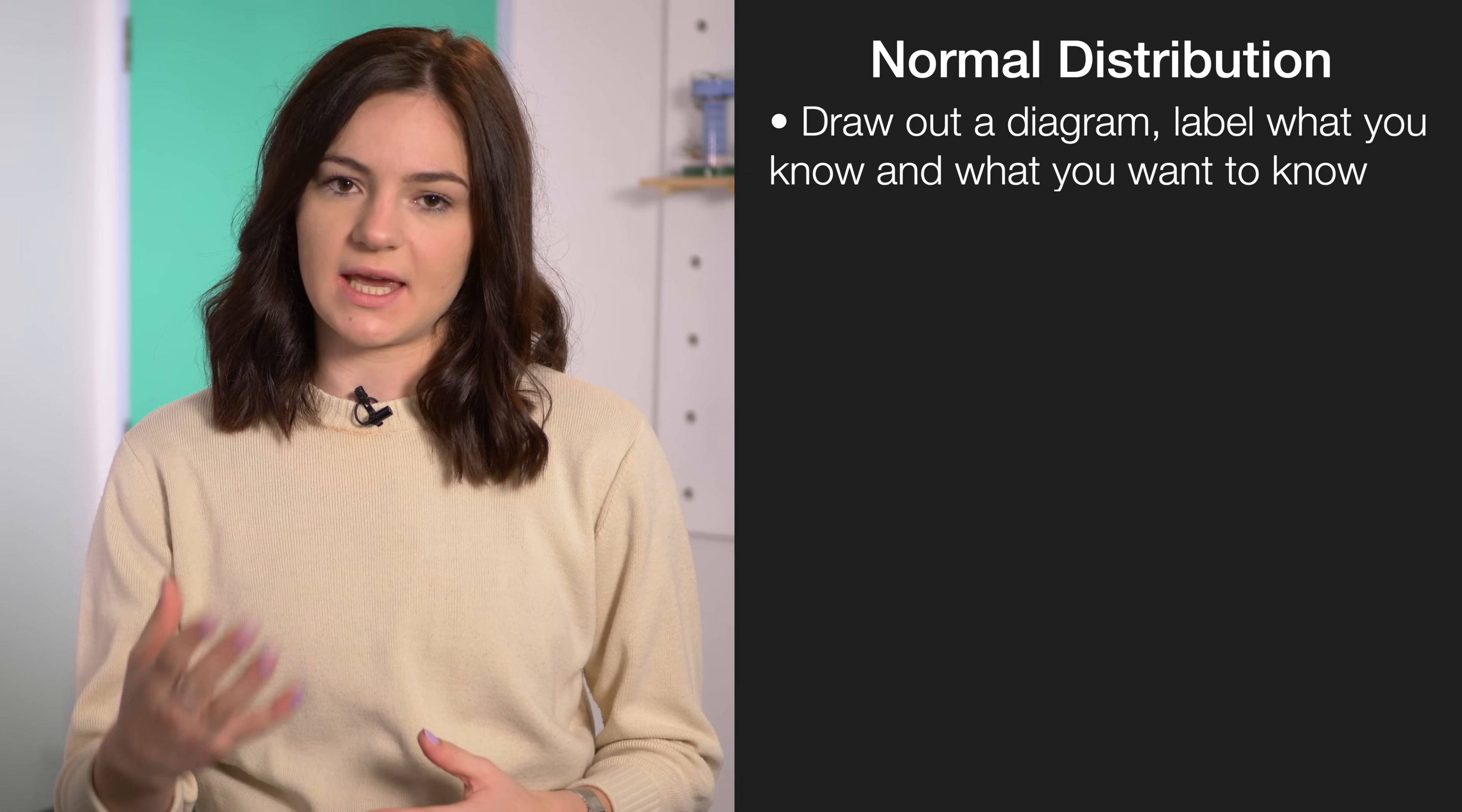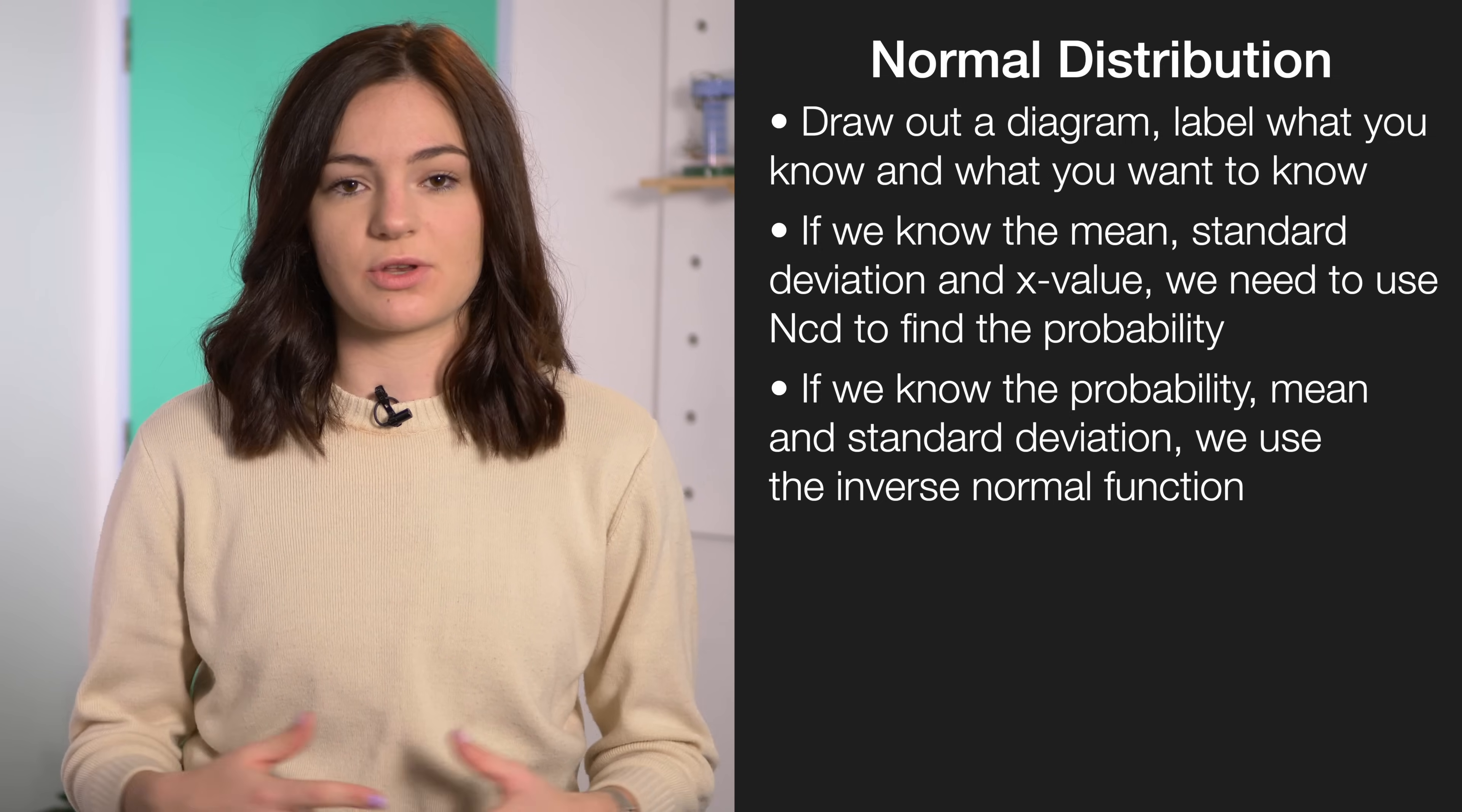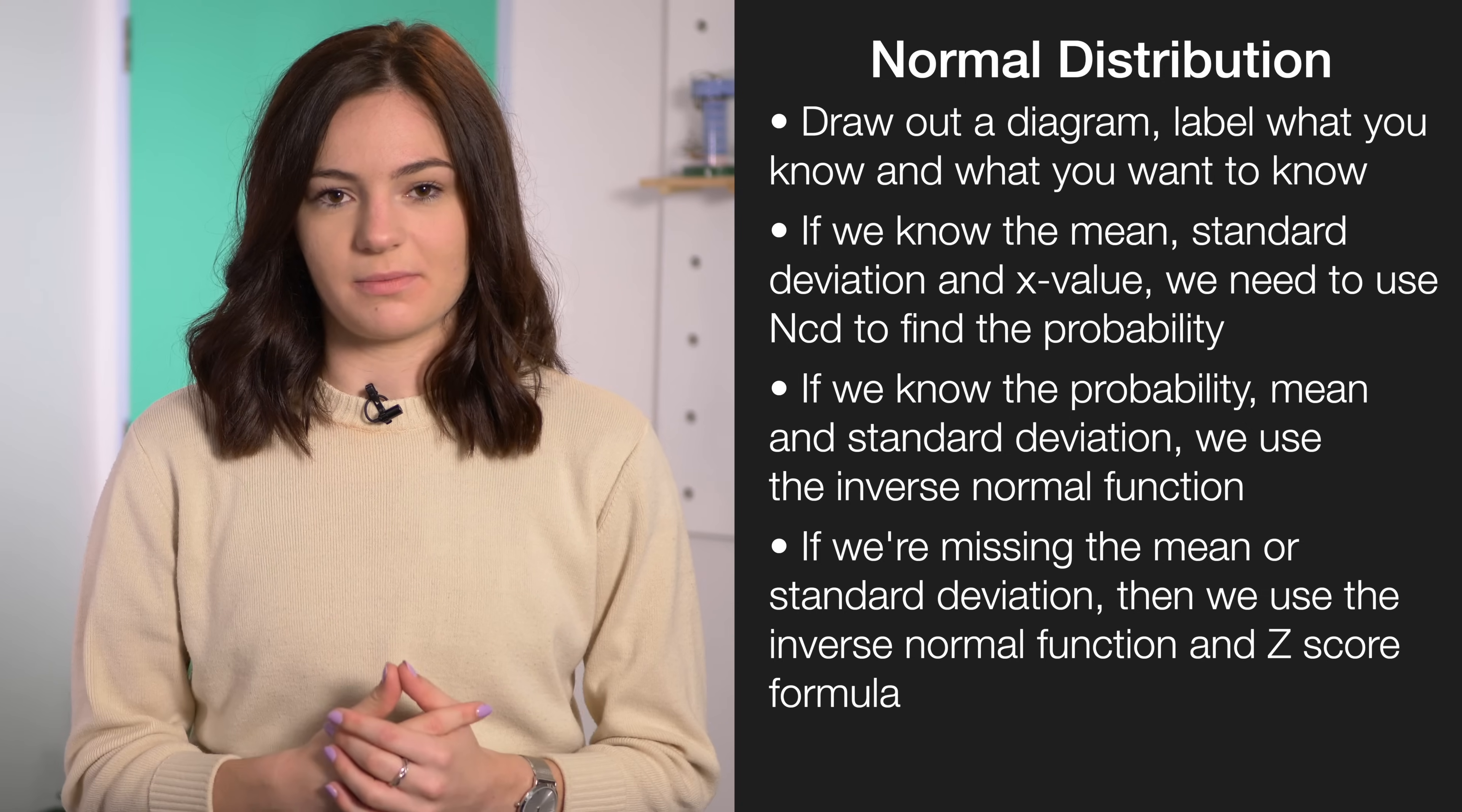For example, if you know the x value, the mean, and the standard deviation, then we're going to want to use our calculator and use the ncd function to calculate the probability, but if we know the probability, the mean, and the standard deviation, then we're going to want to use the inverse normal to then find the x value. The trickier one is when you're given the mean or the standard deviation and a probability, and they're asking you to find either the mean or the standard deviation that you don't know. Then what you have to do is you have to use the inverse normal and your z-score formula, and then you can solve it from there.